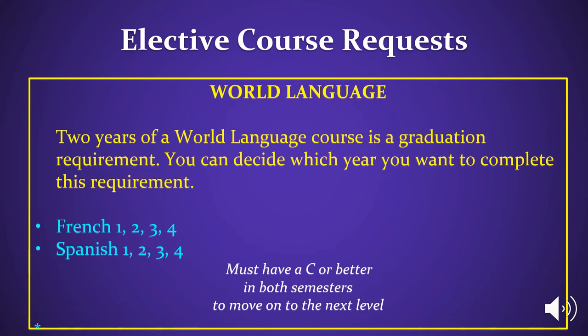World Language. Two years of a World Language course is a graduation requirement. You can decide which school year you want to complete this requirement. If you completed Spanish 1 or French 1 with a C grade or better this year, then it is recommended that you move on to Level 2 of that course next year. If you did not take Level 1 of a World Language in your freshman year, it is recommended that you choose one now. Write in the World Language course that you are requesting on line 6, 7, or 8.